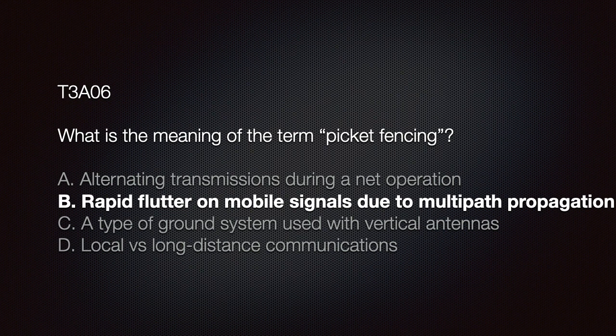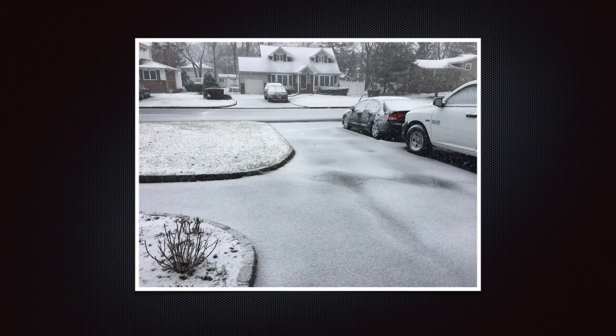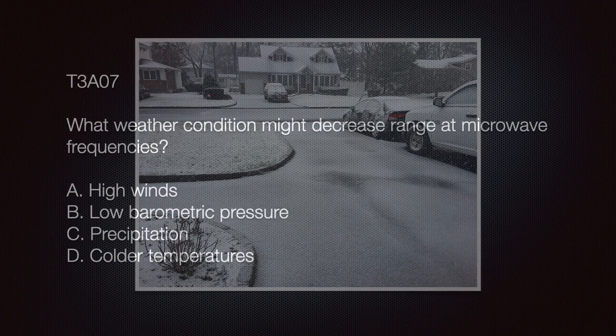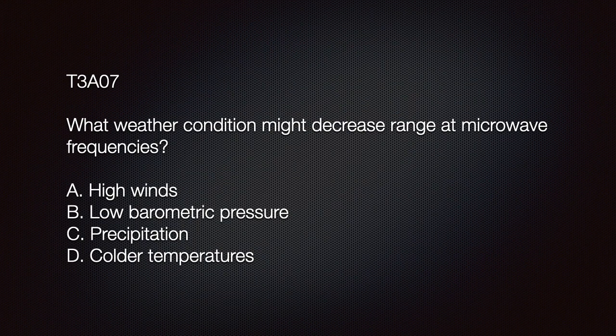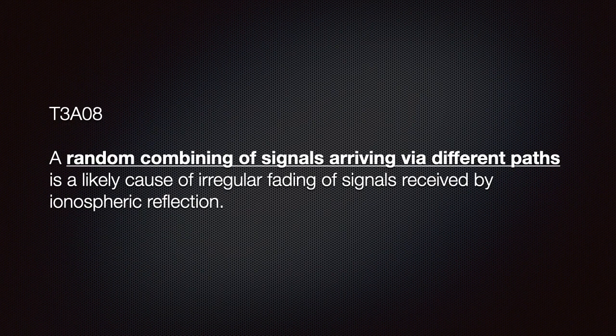You should know that precipitation is a weather condition that will decrease range at microwave frequencies. Precipitation comes in many forms — snow, rain, sleet, mist, hail, even fog — and water absorbs microwave radiation. The exam question: What weather condition might decrease range at microwave frequencies? Options: A — high winds; B — low barometric pressure; C — precipitation; D — colder temperatures. The correct answer is C: precipitation.